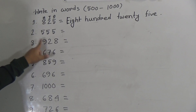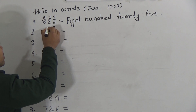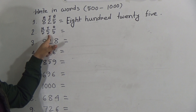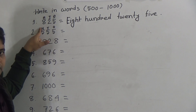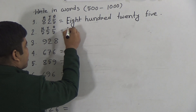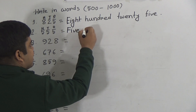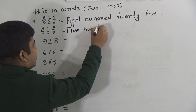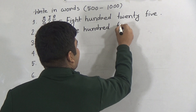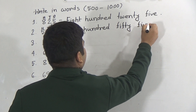Similar way, number 2: 5, 5, 5. Here 5 is in the 1's place, 5 is in the 10's place, and 5 is in the 100's place. So we read this number as 555. Write: 5 hundred — S-U-N-D-R-E-D. Five hundred. Then 55: F-I-F-T-Y. Fifty-five.